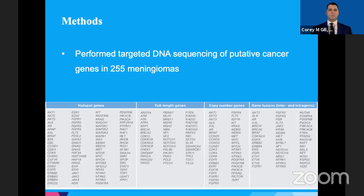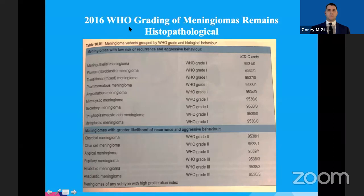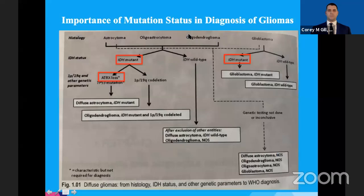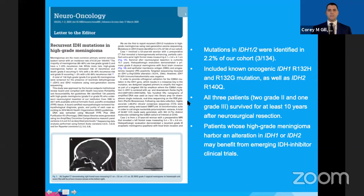In 2016, the grading criteria for meningiomas remained largely histopathological — low-grade WHO grade one lesions separated from higher grade two and three. However, for gliomas in the same 2016 edition, the treatment strata has largely switched to one that is mutation-based, with large decision points based on IDH status and ATRX loss. We sought to determine whether these mutations also occur in meningiomas, and indeed we identified that 2.2% of high-grade meningiomas harbor alterations in IDH1 and IDH2 at the known oncogenic locus IDH1 R132H. This means high-grade or recurrent meningioma patients could potentially be screened for IDH gene mutations and be eligible for IDH inhibitor clinical trials.